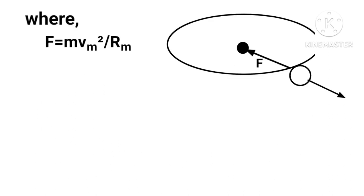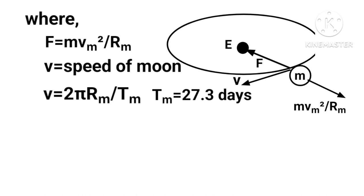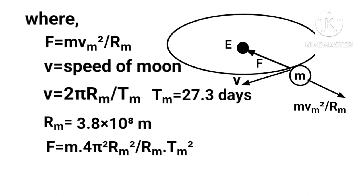The centripetal force is given by F equals mv squared upon r, where v is the speed of the moon, given by v equals 2πr upon T. Here T equals 27.3 days and r equals 3.84 times 10 to the power of 8 meters. Putting the values in, the acceleration comes out to be 1.6 meters per second squared, which is much smaller.